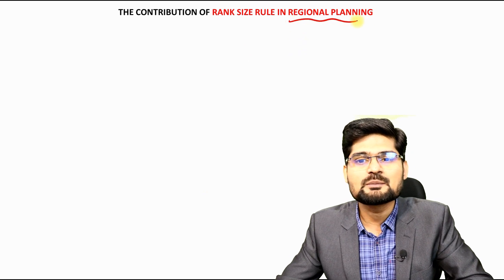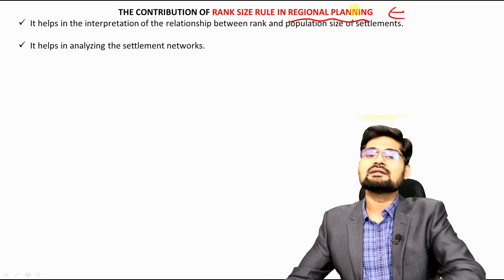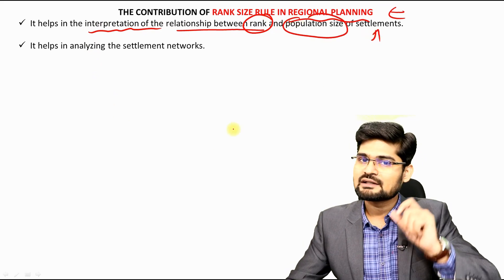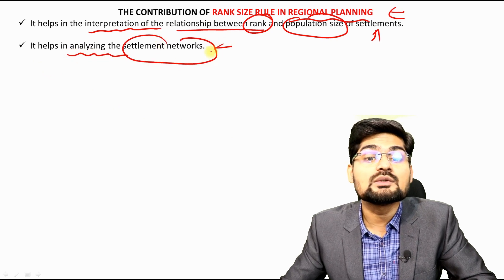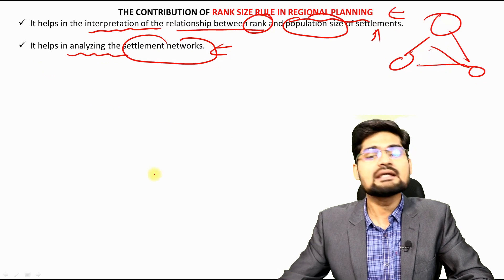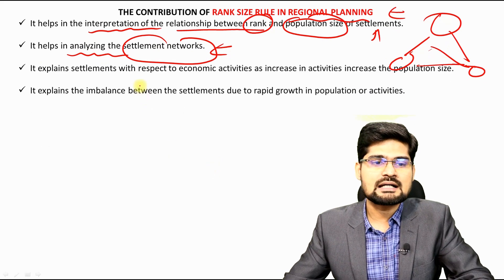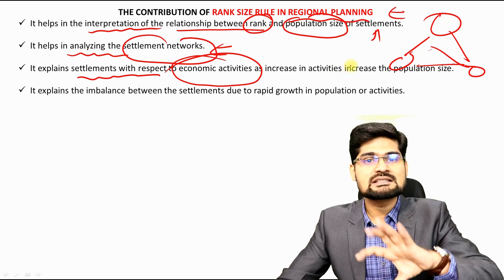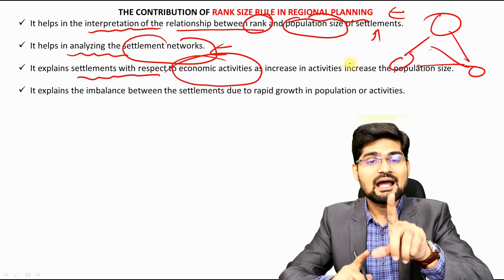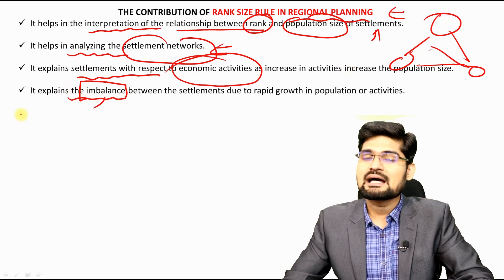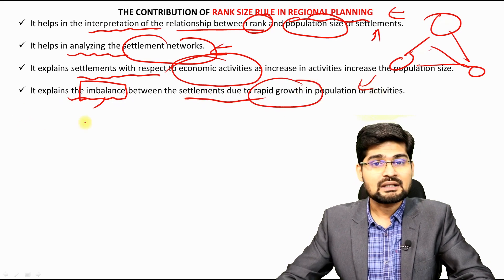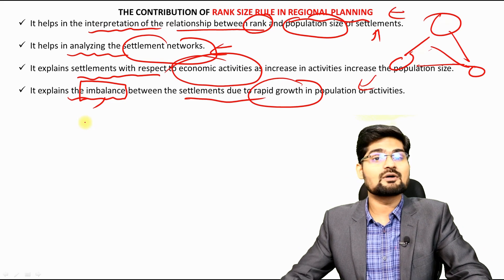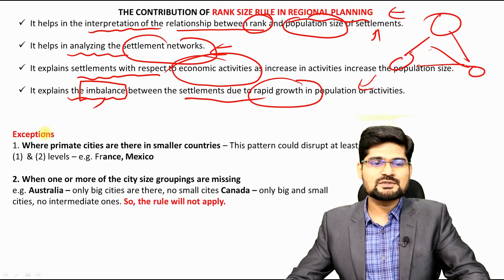The contribution of rank size rule to regional planning includes: first, interpreting the relationship between rank and population size of settlements in a country or region; second, analyzing settlement networks and linkages between settlements. It also helps explain settlements with respect to primary, secondary, and tertiary economic activities, and explains imbalances and disparities between settlements due to rapid growth in particular centers.